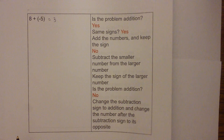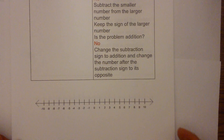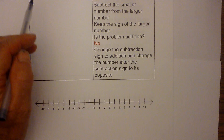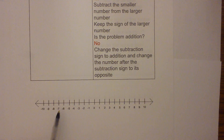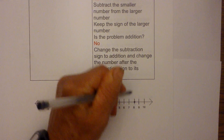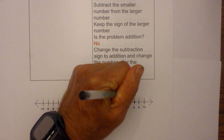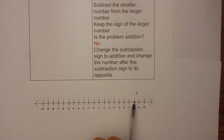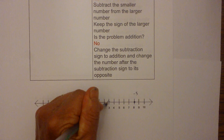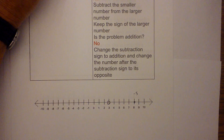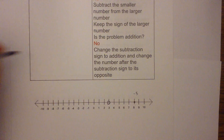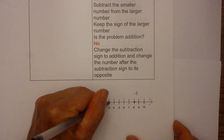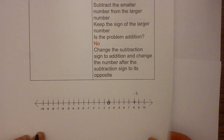Now let's see the same thing on the number line. Whenever you have a negative number — the negative five — you move to the left. I'm going to start at positive eight, and I'm adding a negative five, so I will move five places to the left. Negative means move left; positive means move right. One, two, three, four, five — that lands on three. The answer is three.